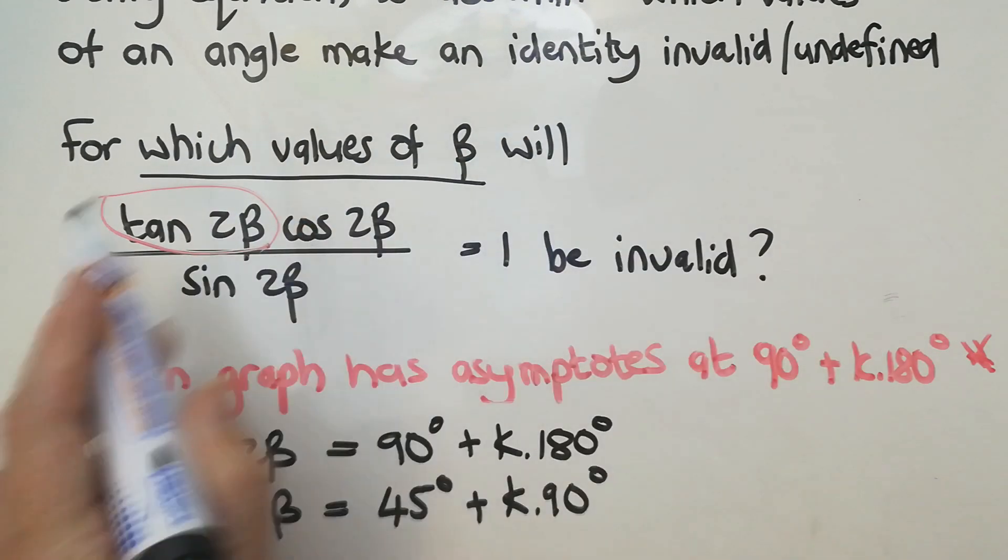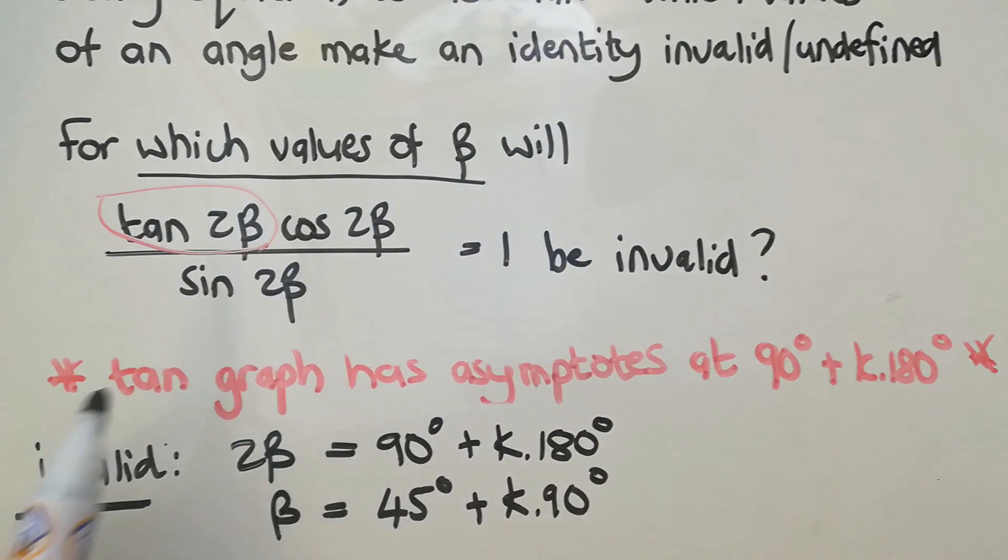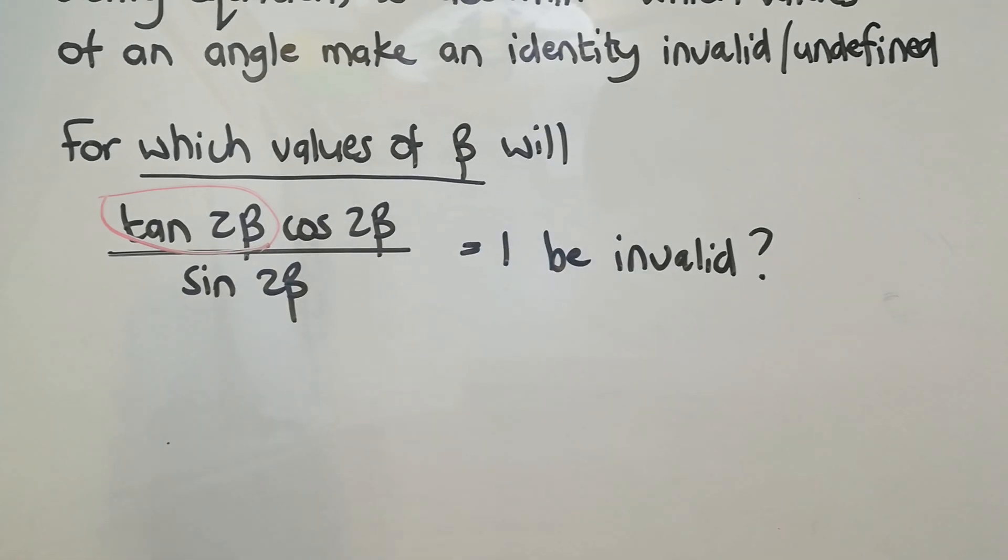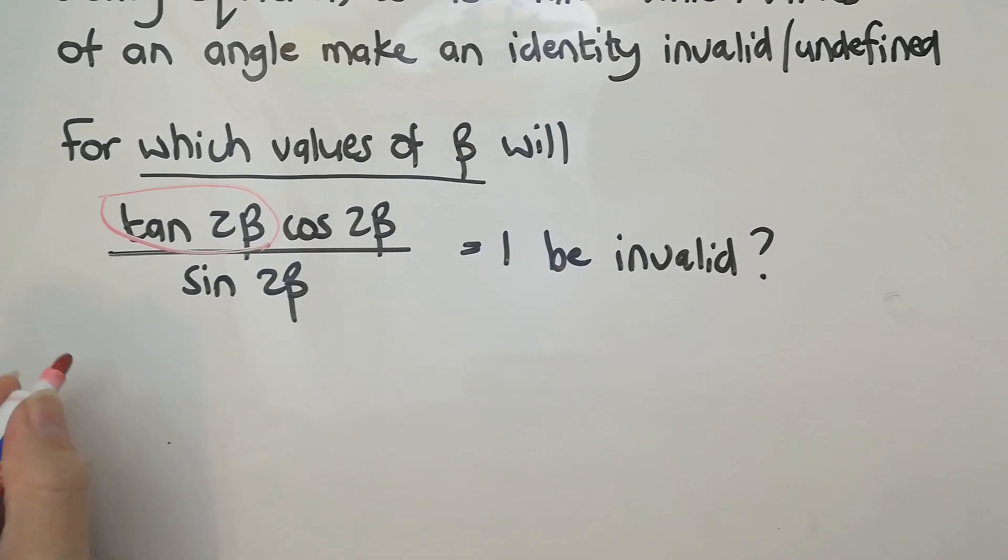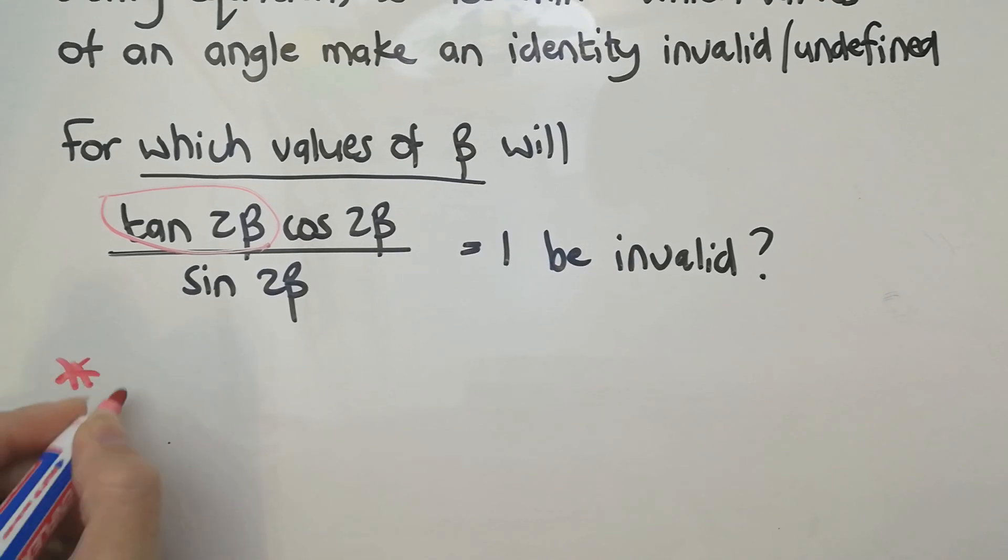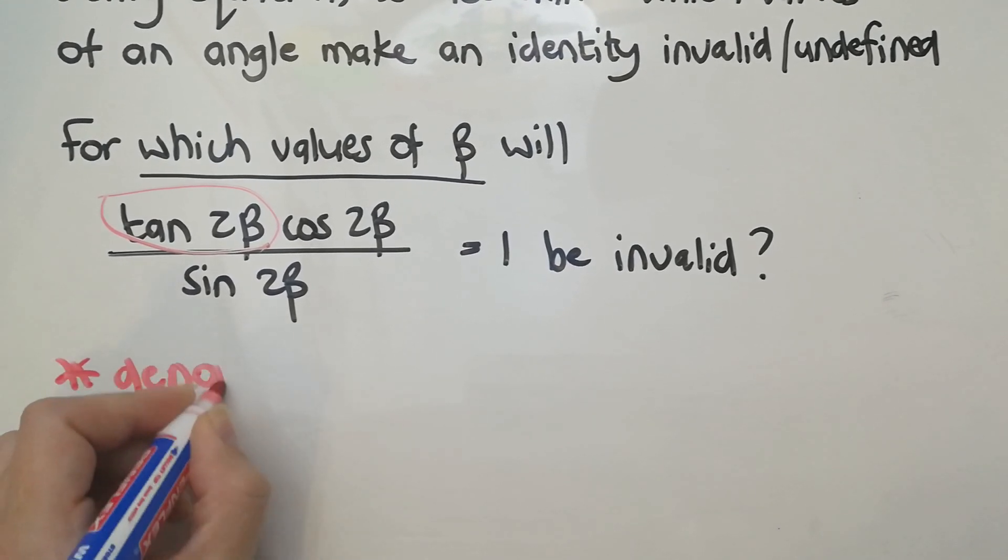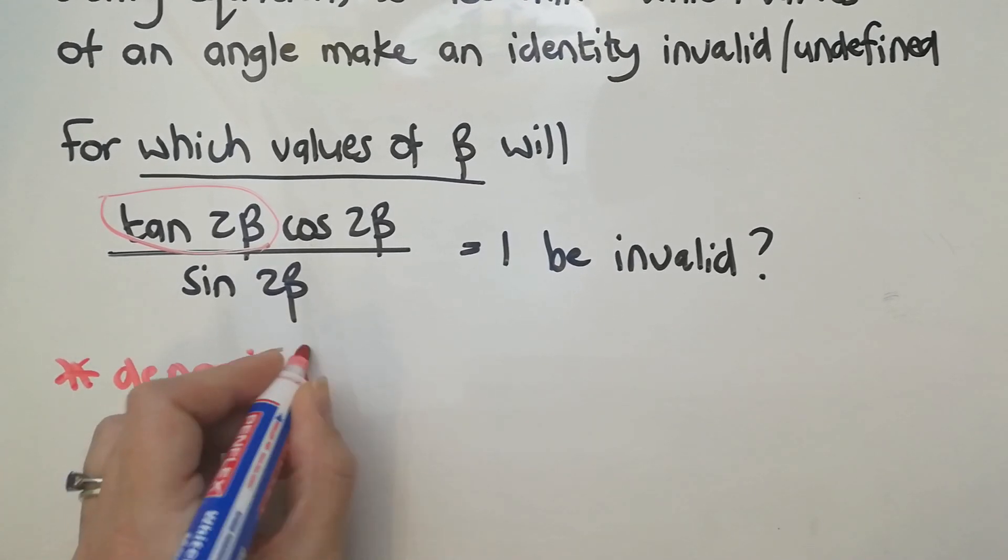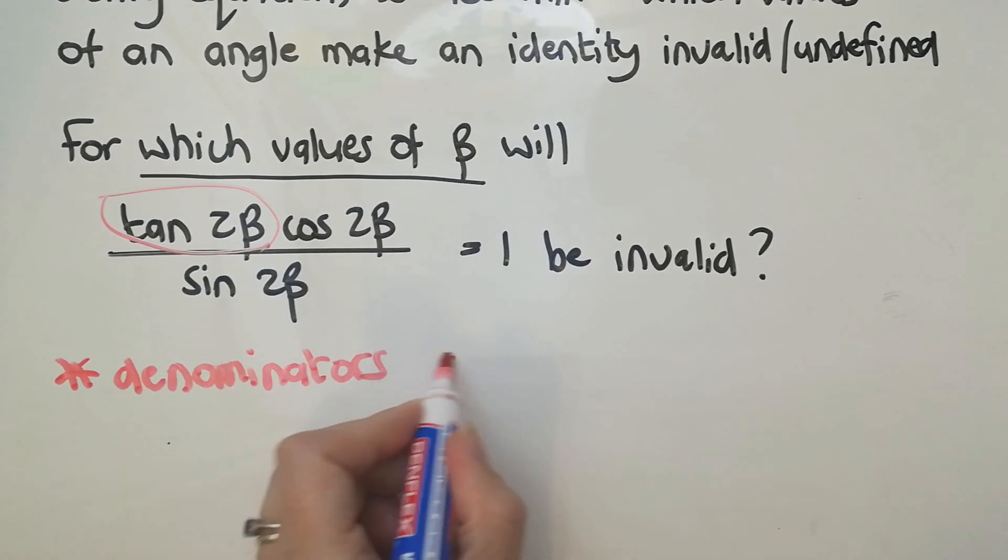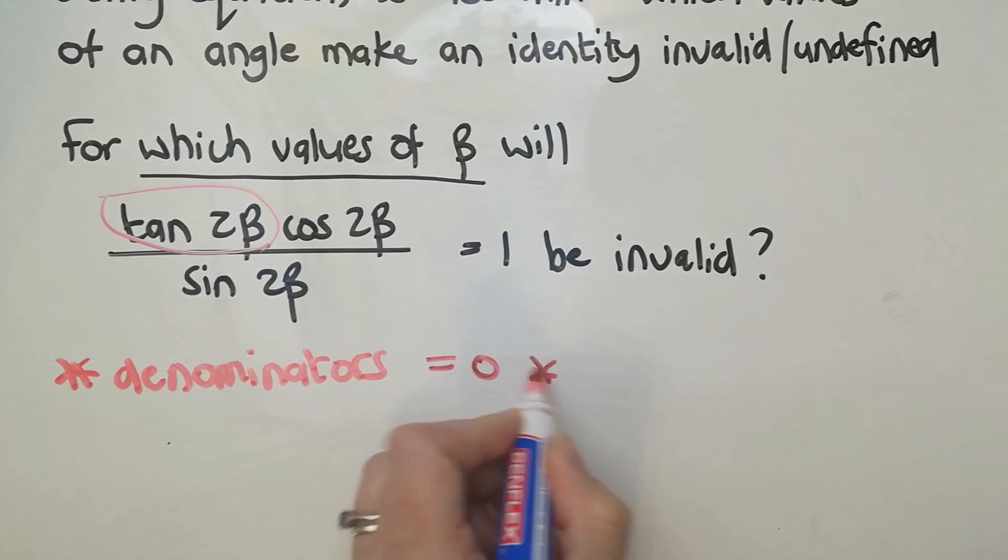So for what values of beta will this be invalid? Well, if beta is 45 degrees and every 90 degrees repeats. The other thing which probably will be quite intuitive is that you're looking for any denominators, and if they equal 0, obviously you have something that is undefined, which makes it invalid.